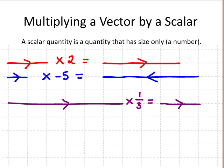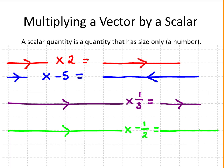Taking a final example. Multiplying the vector by a half halves its length. We multiplied by a negative scalar — negative a half — so the direction of the vector is reversed.